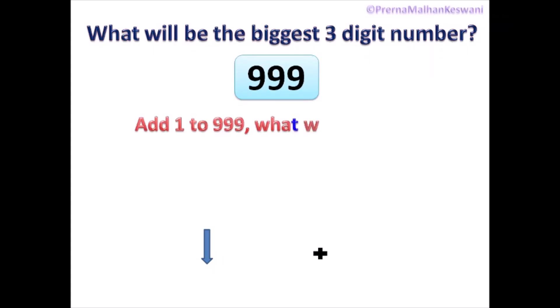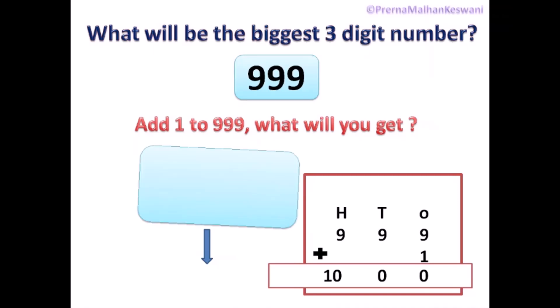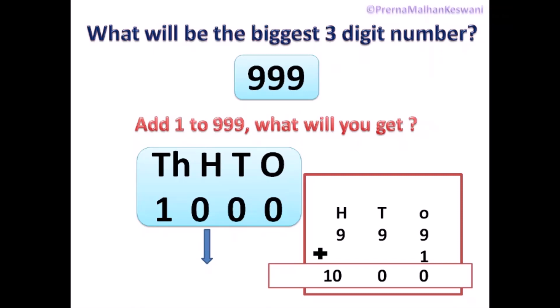Now, children, when you add 1 to this biggest three-digit number, what will you get? Think. Under HTO — that is 100s, 10s and 1s — when you add 1 to 999, you will be getting 1, 0, 0, 0, which is known as one thousand. Now, children, it is a four-digit number. It is the smallest four-digit number.